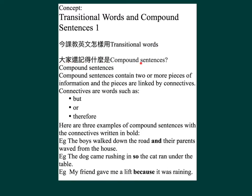大家還記得什麼是 Compound Sentences? Compound Sentences contain 2 or more pieces of information, and the pieces are linked by connectives. Connectives are words such as 'but', 'or', 'therefore'. Here are a few examples of compound sentences with the connectives written in bold.